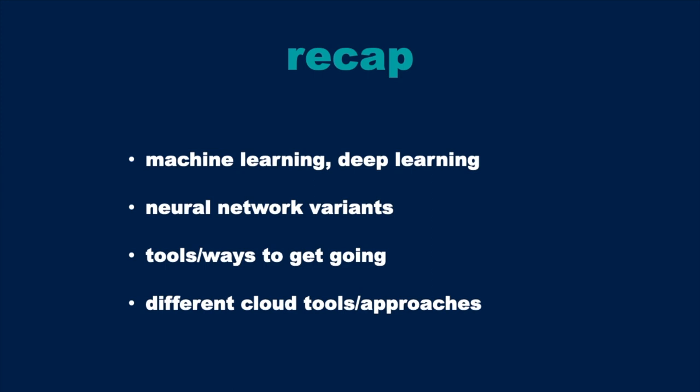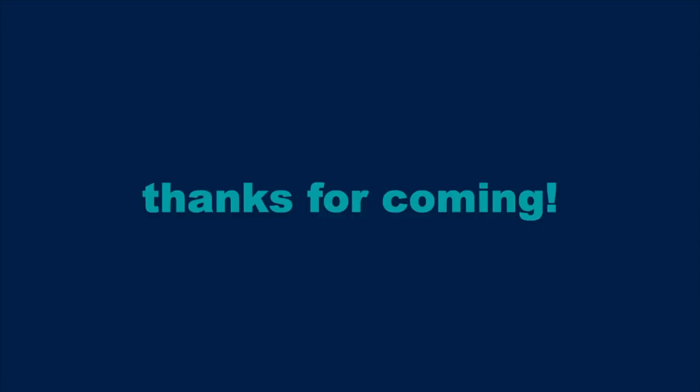To recap: we looked at what machine learning is, covered deep learning and different neural network variants, reviewed tools and frameworks to get started, and explored several Google Cloud-based approaches you can use today. If you sign up for Google Cloud, you get $300 in free credits, which can go a long way if used carefully. Thank you all for listening — happy to try and answer some questions.